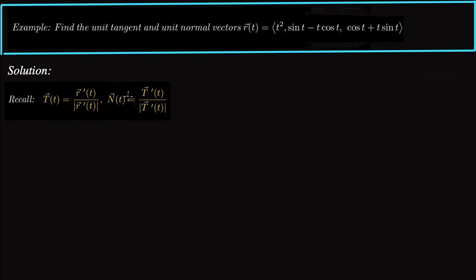The unit normal vector by definition is the tangent vector's derivative divided by its magnitude, which makes it a unit vector as well. We can actually show that the tangent vector is perpendicular to its derivative — I'll link to a video where that's done. These are the definitions of the unit tangent and unit normal vectors.